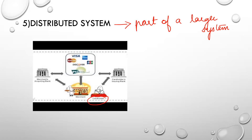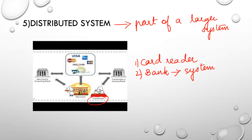There should be a link between the cardholder's issuing bank and the merchant's acquiring bank — that is again a system. So you just swipe your card and the money is deducted, but inside there are a lot of systems embedded. Your embedded system is a part of a larger system.